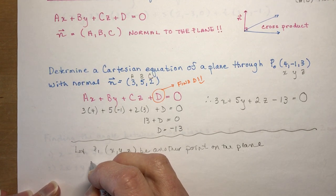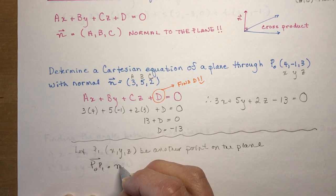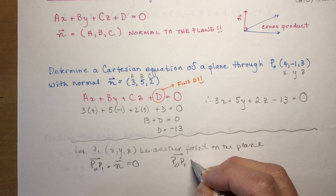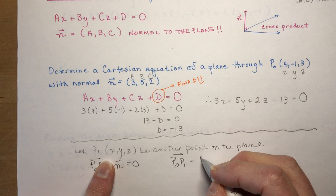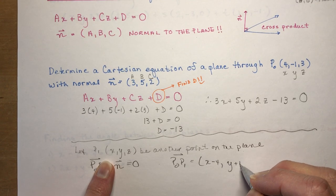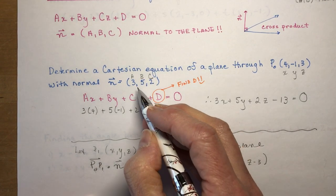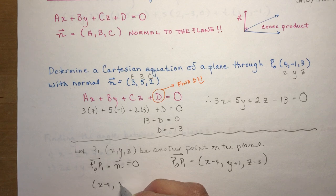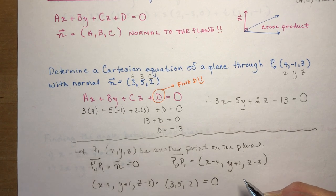So that means the vector p0, p1 dotted with the normal has to be equal to 0. So p0, p1 vector is going to be p1 minus p0, so my p0 is up here. So I have, this is going to be x minus 4, y plus 1, and z minus 3. And I'm going to dot that with the normal and set it equal to 0. So I have x minus 4, y plus 1, z minus 3 dotted with 3, 5, and 2 has to be equal to 0.